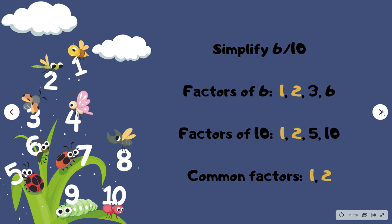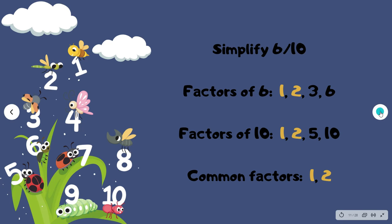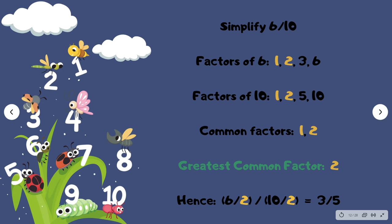The common factors between both numbers are 1 and 2. The greatest common factor is 2. Hence, you divide 6 by 2 and you divide 10 by 2 to give you 3 over 5.